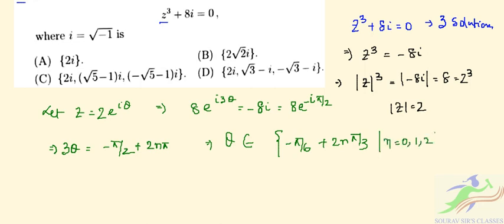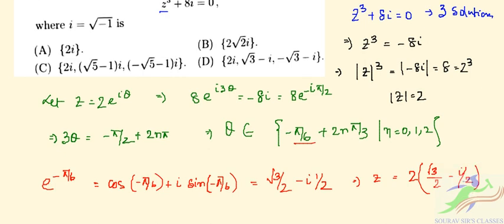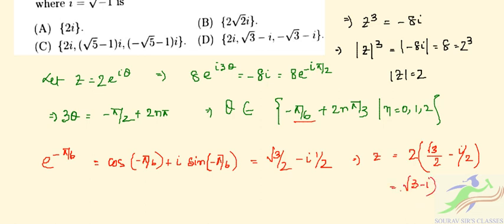For n = 0: θ = -π/6. So z = 2e^(-iπ/6) = 2(cos(-π/6) + i·sin(-π/6)) = 2(√3/2 - i/2) = √3 - i.